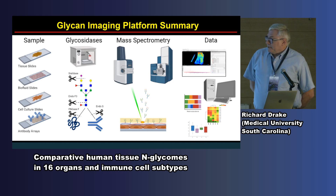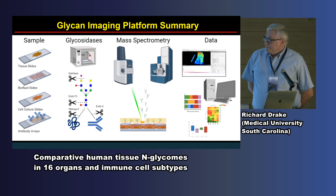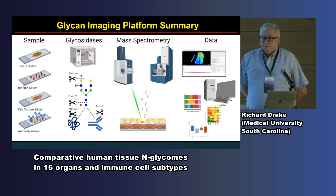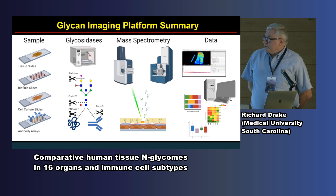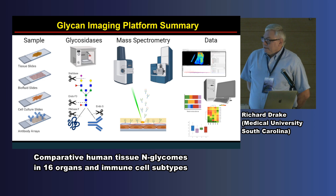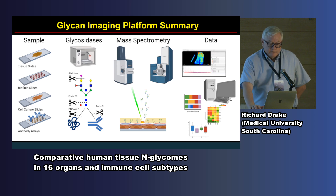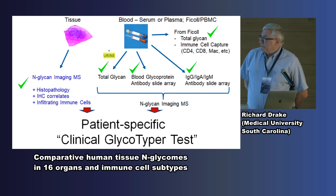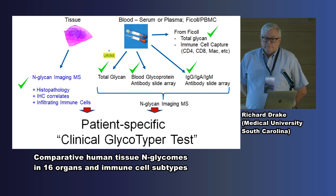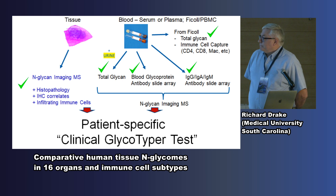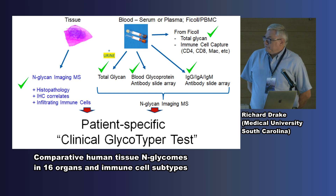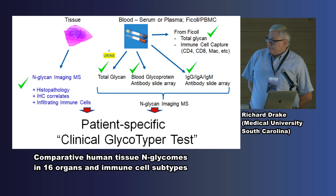We've pretty much come up with a platform on this. Everything on the far left for the sample — if we can get it on the slide, we've got a workflow to get the data back off using different glycosidases, mass spectrometry, and then data analysis, such that pretty much whatever we can get out of the clinic, we've got an assay for now. That's been a goal over the last five years for the three of us developing different technologies.